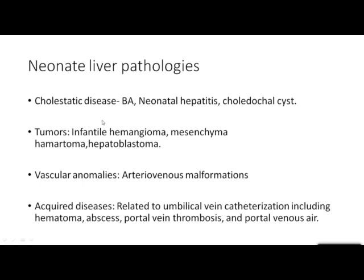In cholestatic jaundice, the main conditions are biliary atresia, neonatal hepatitis, and choledochal cysts. In neonatal liver pathologies, the important thing is jaundice. These are the most important causes radiologically. The tumors include infantile hemangioma, mesenchymal hamartomas, and hepatoblastomas. Vascular anomalies include arterial malformations, and acquired disease in neonates is related to umbilical artery catheterization.